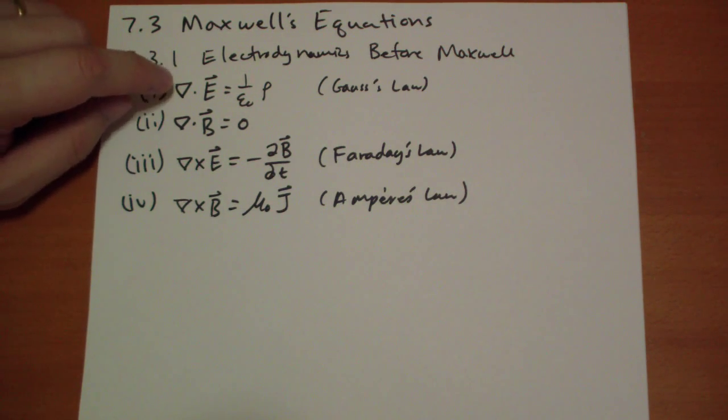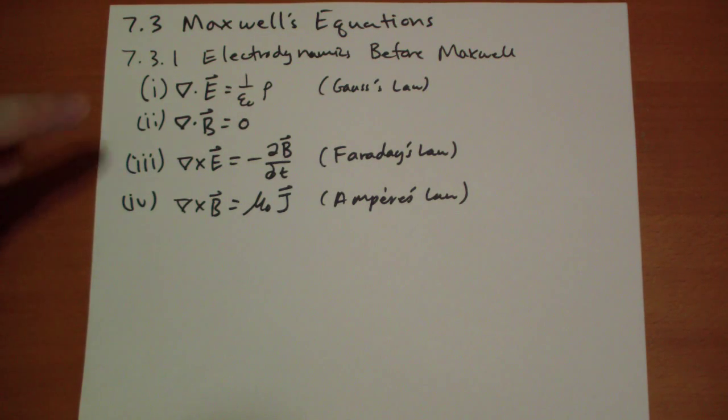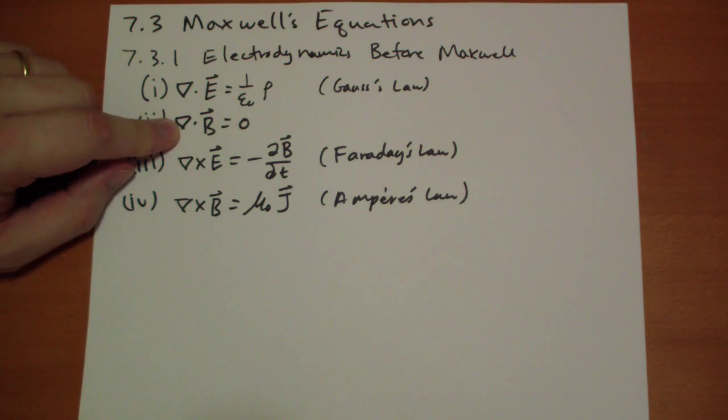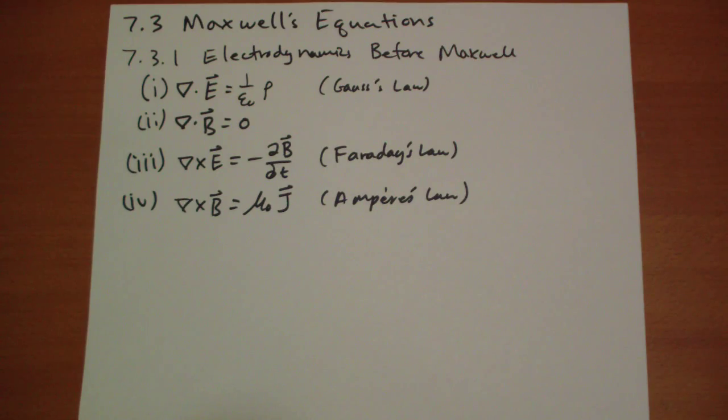Once again, the divergence of the electric field is equal to the charge density. And we have an integral component of that that says the flux through a volume is equal to the total charge enclosed, the electric flux through a volume. Then we have this guy that says there's no magnetic charge anywhere. Then we have this guy, Faraday's Law, that says when you're changing a magnetic field, you create a curly E field.